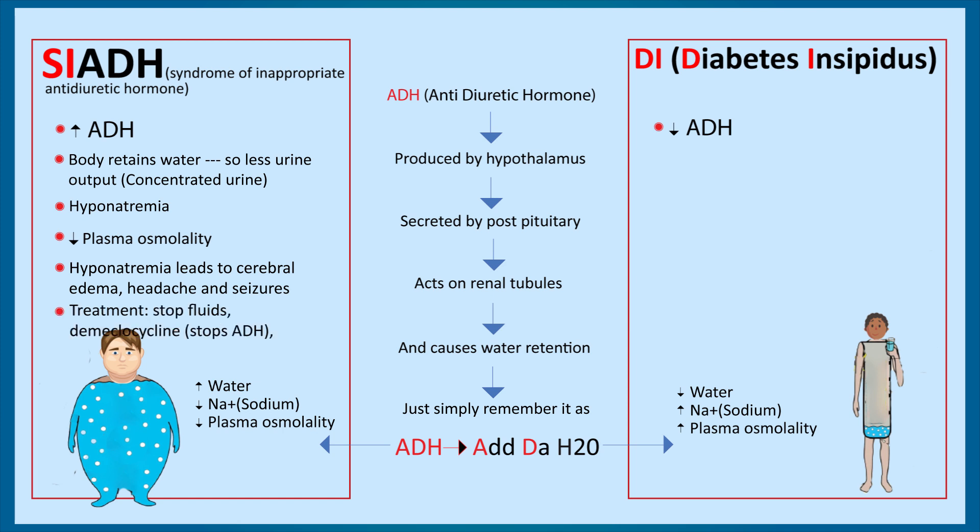How do you treat SIADH? Just opposite to its features. Stop the fluids — the body already has too much water, so stop the fluids. Give demeclocycline, whose function is to stop the action of ADH — since there is already increased secretion of ADH. And give sodium, because the patient has hyponatremia.